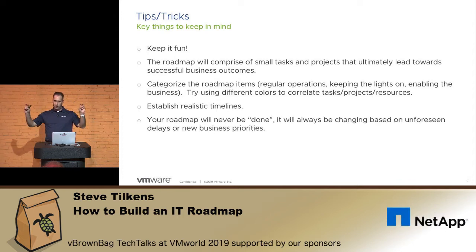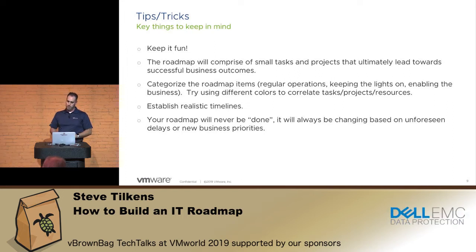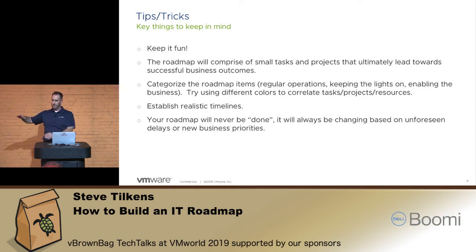Your roadmap will never be quote-unquote done, so don't get frustrated — it's always going to be changing. New business priorities will come up, you'll need to shift things around, maybe there's a firmware bug that completely derails your roadmap. Also, you'll never get to the end of a roadmap. If you build an 18-month roadmap and get 12 months in, you'll add another 12 months. It's always going to be a rotating, evolving thing.